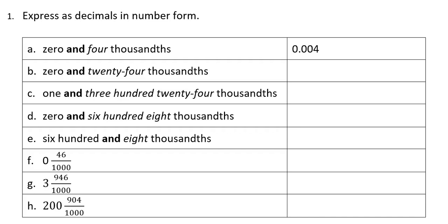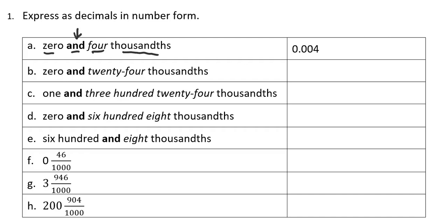In this first section, I have decimals written both in word form and fraction form, and I need to write them in number form or standard form. You can see for the first problem, the decimal in word form was zero and four thousandths. A couple of clues here: when we read our decimals, we always say 'and' where the decimal point occurs — we don't say 'point,' we say 'and.' So that's one clue. I know where my decimal is going to fall, and that also tells me that the zero will be in the ones place.